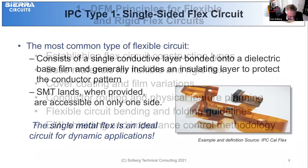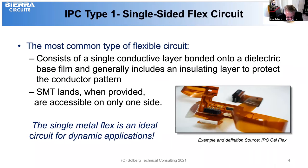The IPC Type 1 is the most common type of flexible circuit, consisting of a single conductive layer bonded between two insulating layers. SMT lands, when provided, are accessible only to one side of the circuit. The single metal flex circuit proves to be the ideal circuit for dynamic applications.